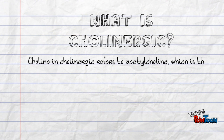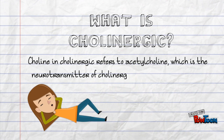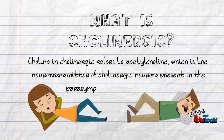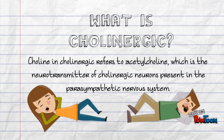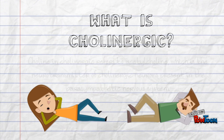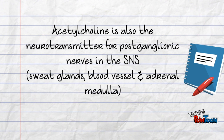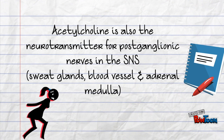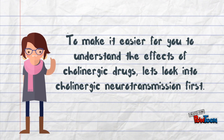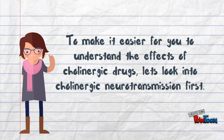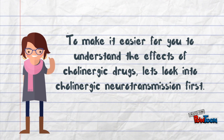What is cholinergic? Choline in cholinergic refers to acetylcholine, which is the neurotransmitter of cholinergic neurons present in the parasympathetic nervous system. Acetylcholine is also the neurotransmitter for postganglionic nerves in the sympathetic nervous system. To make it easier to understand the effects of cholinergic drugs, let's look into cholinergic neurotransmission first.